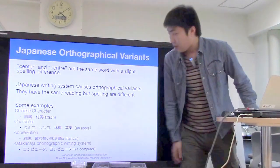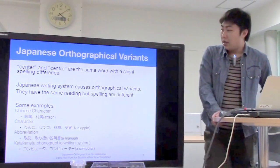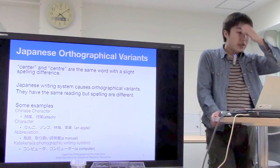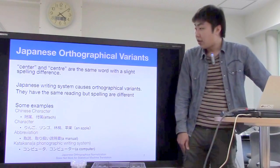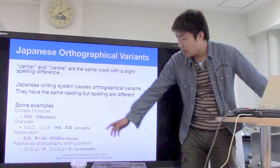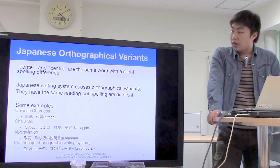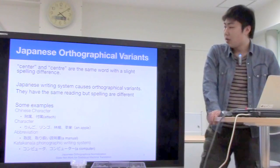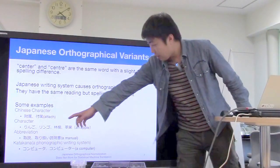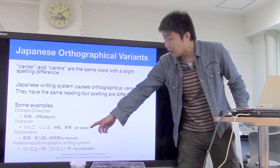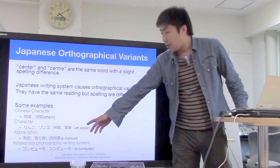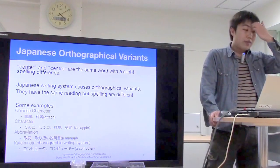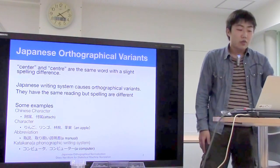I'll give you some examples. First is the Chinese character problem: the left one is an old and complex style character, while the right one is a simple and newer character. As you may know, in Japanese there are four kinds of writing styles: hiragana, katakana, kanji, and another kanji variant. These different styles can all represent the same word, such as 'apple.' There are also many abbreviations in Japanese words.